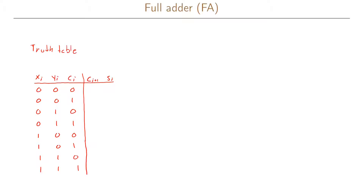Looking at the carry output: we have a carry when at least two inputs are 1, which occurs in four specific cases; in the other cases there is no carry. Looking at the sum output: si is 1 when an odd number of inputs are 1 (one or three inputs), giving a 1 in four different cases and 0 for the rest.